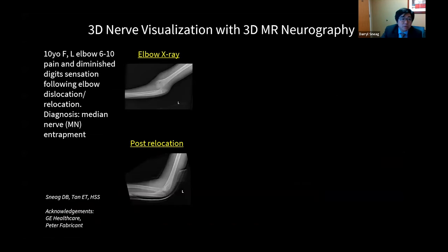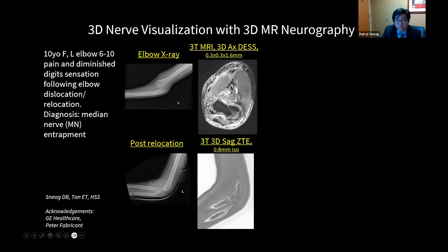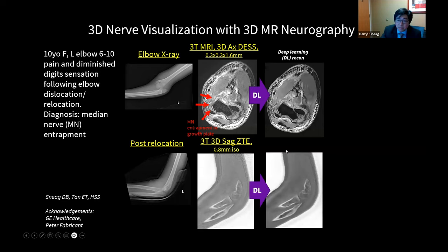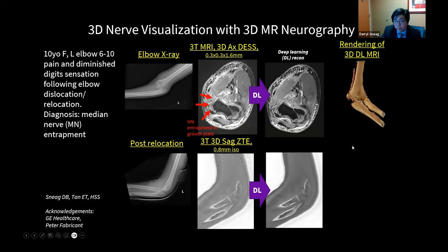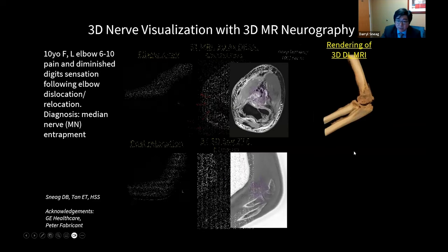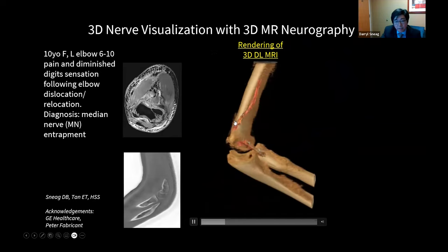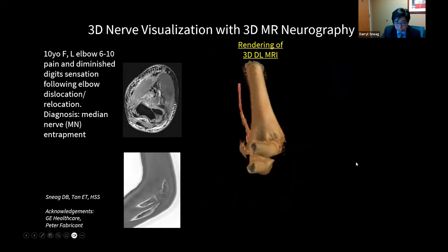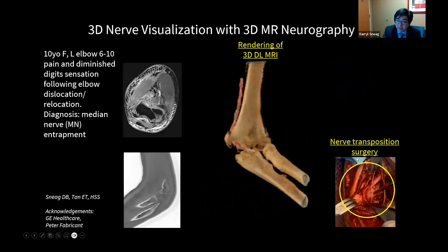An elbow example: a 10-year-old female with a fractured and relocated elbow. The median nerve was entrapped during the fall or relocation process. Using 3D MRN, we see the median nerve is entrapped in the growth plate, which we can compare against the 3D ZTE bone image. We also apply Deep Learning Reconstruction to reduce noise and sharpen images before 3D rendering, revealing the trapped median nerve at the growth plate — corroborated by intraoperative photographs from nerve transposition surgery.